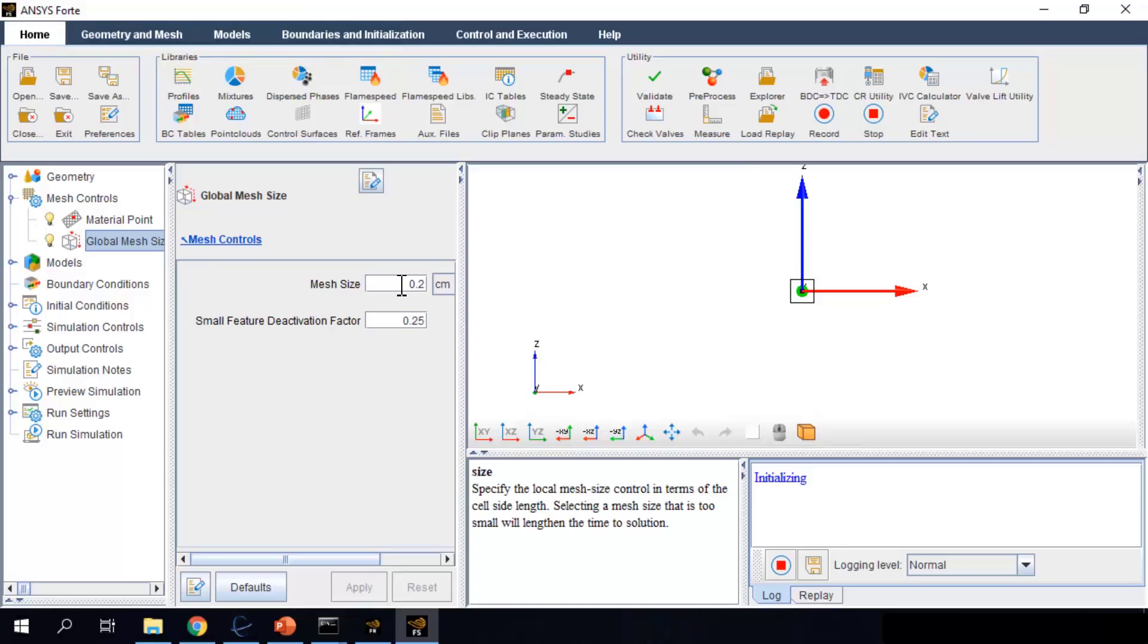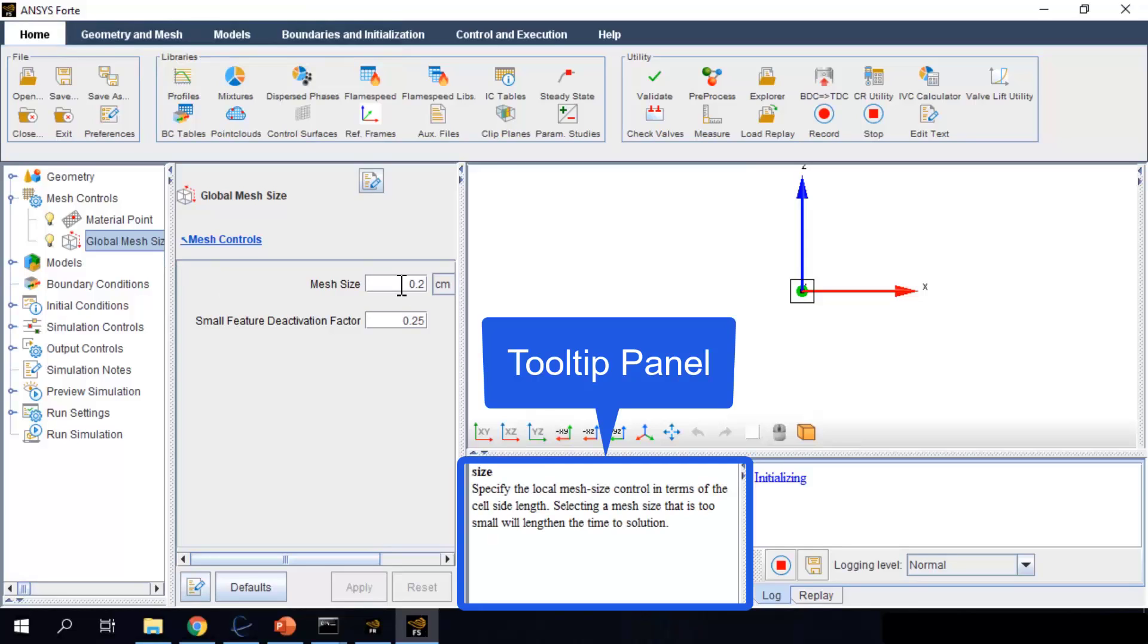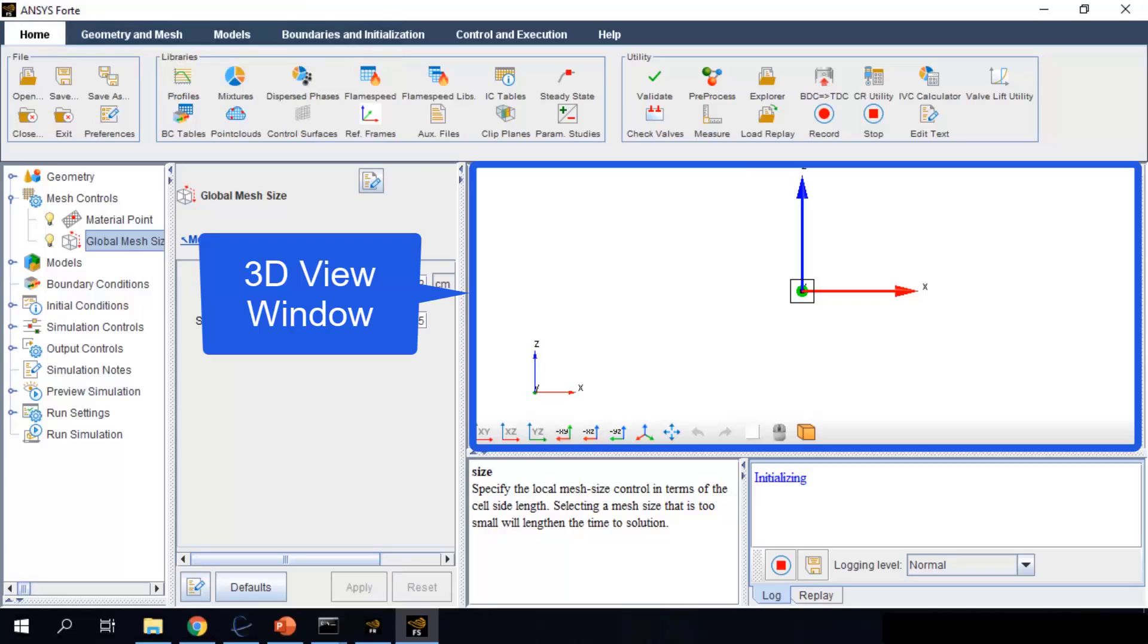As you hover your mouse over any parameter or option, you will see more information about it in the tooltip panel. The 3D window on the right side will display the simulation domain once it is set up.